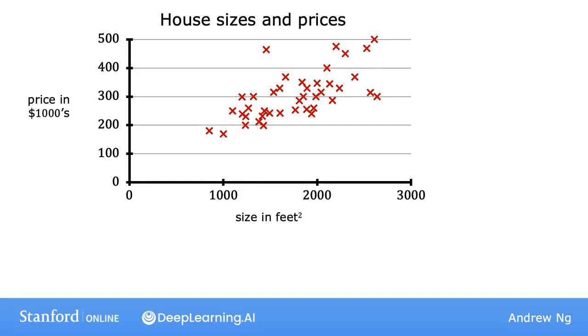Now, let's say you're a real estate agent in Portland and you're helping a client sell her house. And she's asking you, how much do you think you can get for this house? This dataset might help you estimate the price she could get for it. You start by measuring the size of the house and it turns out that her house is 1,250 square feet. How much do you think this house could sell for? One thing you could do is build a linear regression model from this dataset. Your model will fit a straight line to the data, which might look like this.